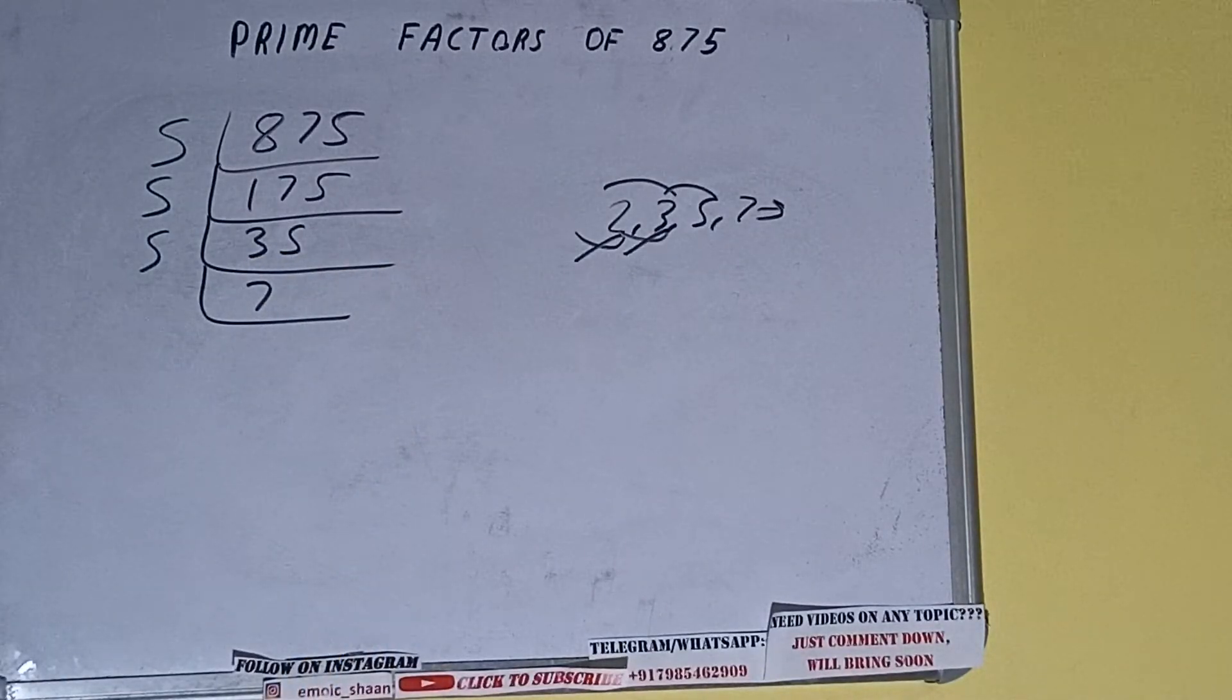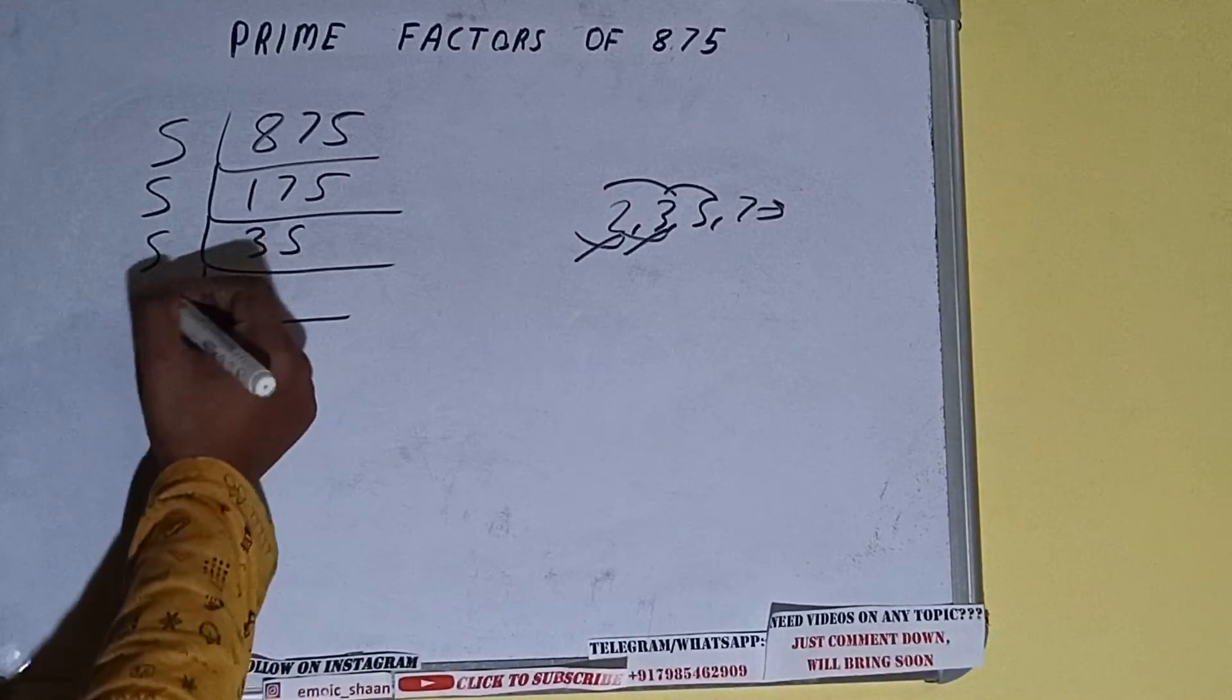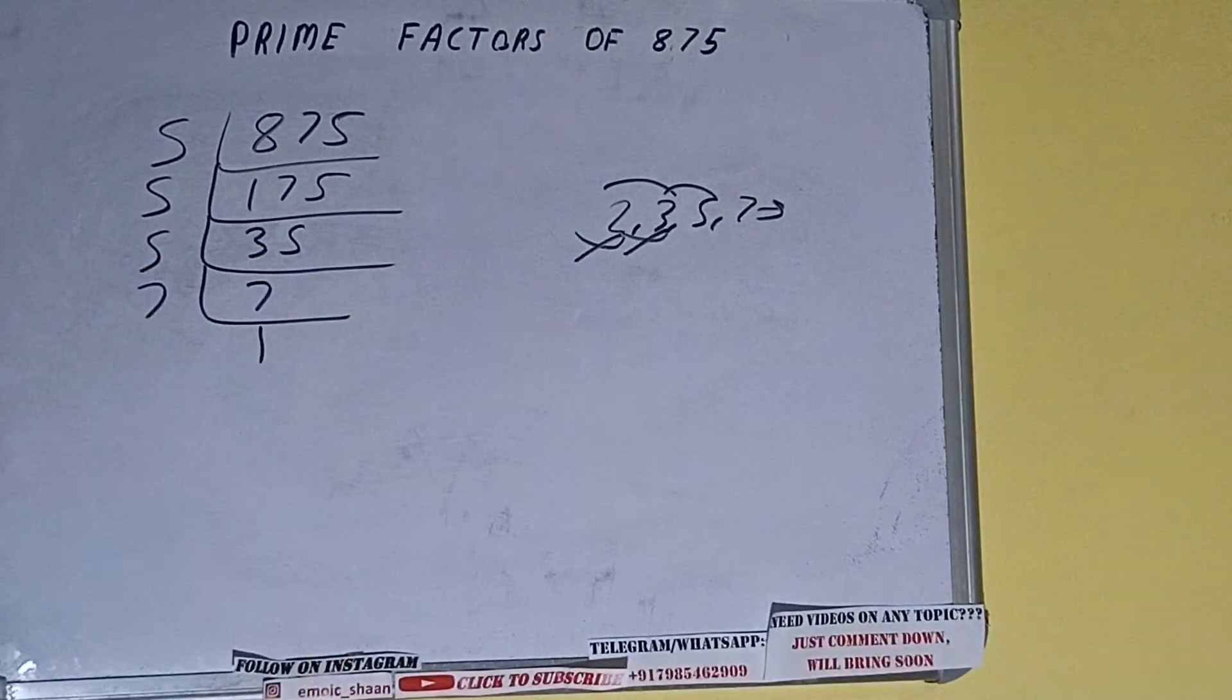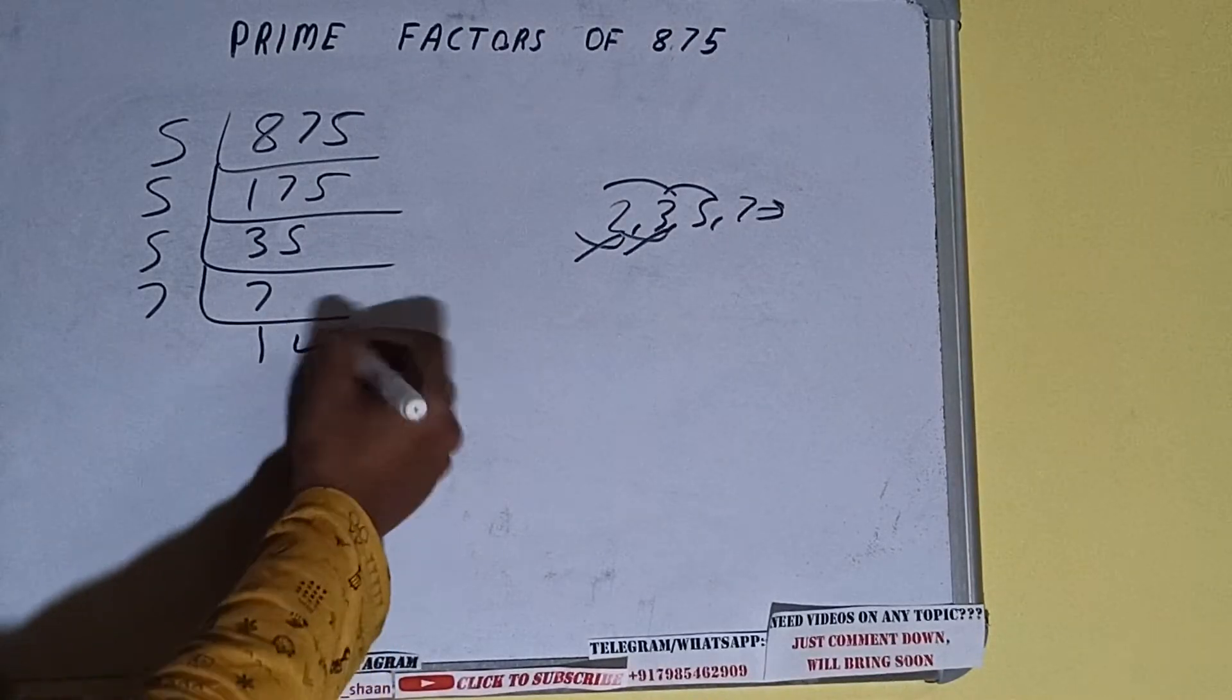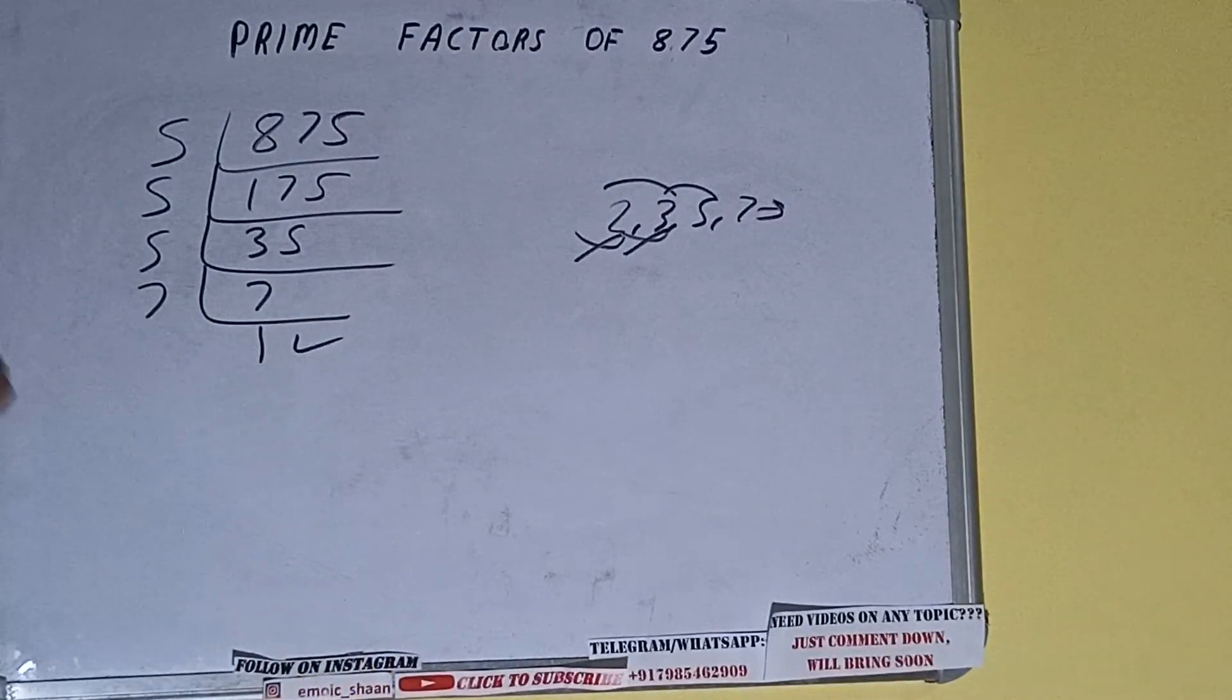And once we do so, we'll be getting 1. Once we get 1, we need to stop and do a last thing, that is the prime factors of 875.